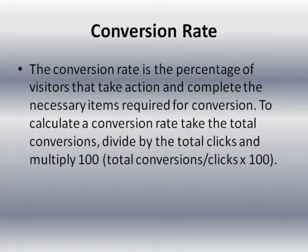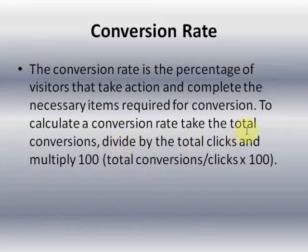Conversion rate: basically, this is the percentage of visitors that take action and complete the necessary items required for the conversion — whether it's entering a name and address, email, phone number, or whatever that particular offer requires. To calculate your conversion rate, take the total conversions, divide by the total clicks, and multiply by 100. That will give you your conversion rate.